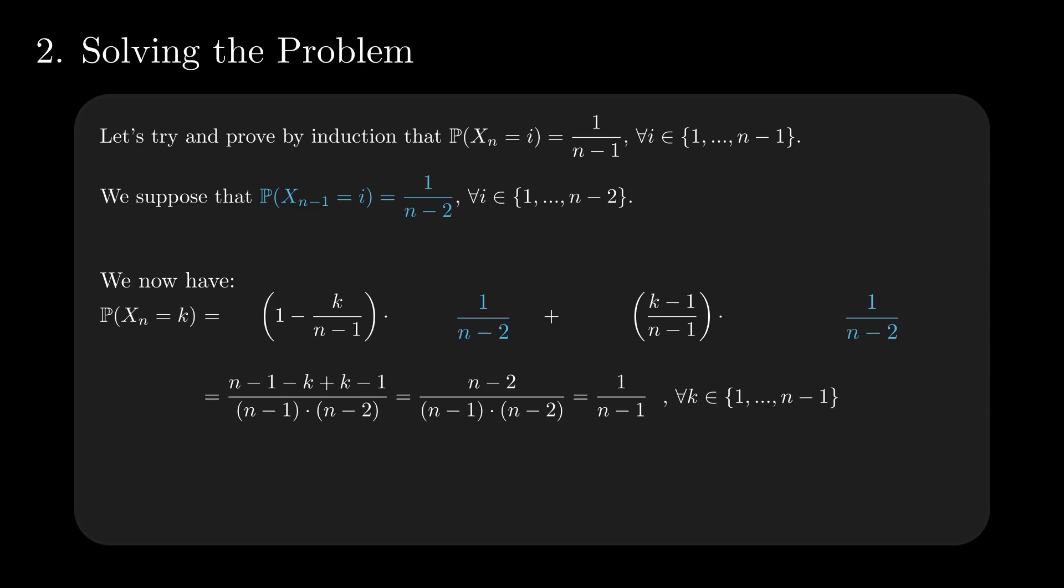For any value of n, all n-1 possible values that the total number of hits can take are equally likely. So the probability that you hit 298 out of 300 tosses is 1/299, or a little more than 0.33%.